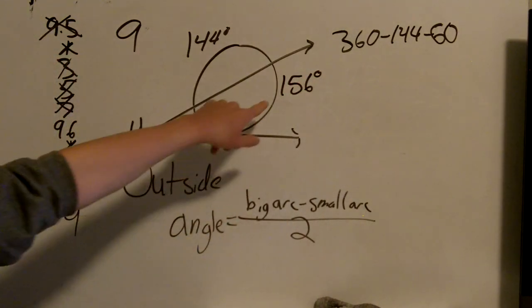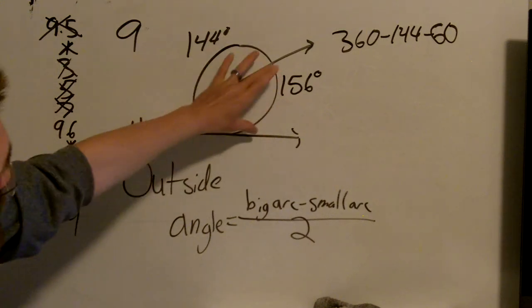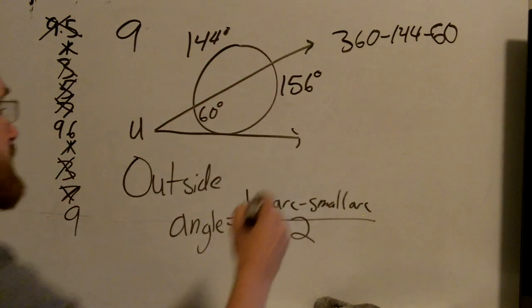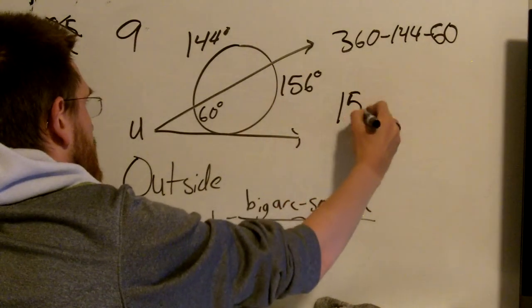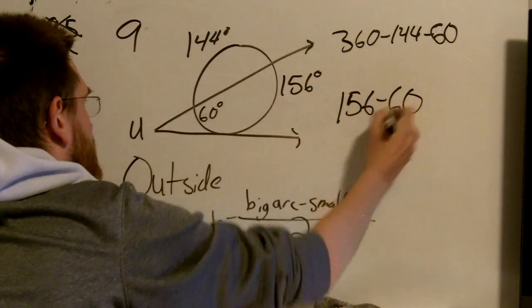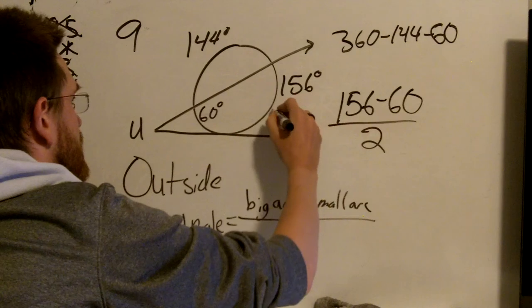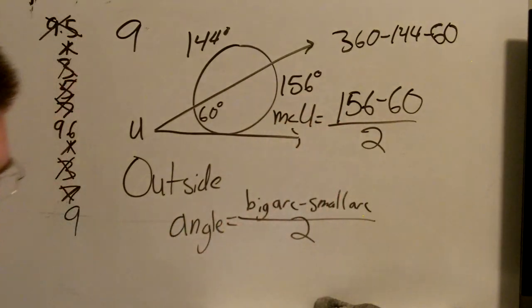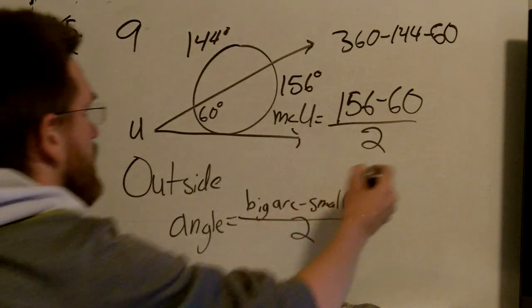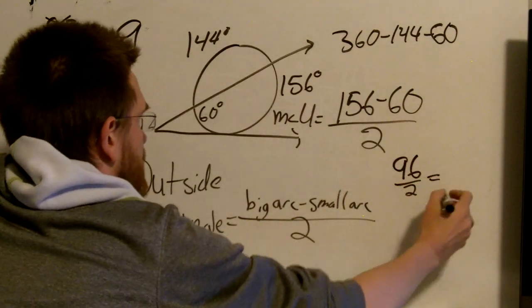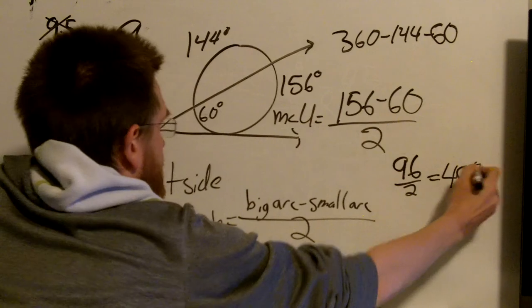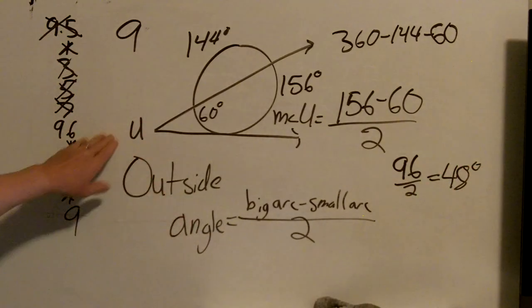And now, these two arcs are in between. So I take 156, big arc minus small arc, divided by 2. The measure of angle U equals 156 minus 60, divided by 2, which would be 96 divided by 2, equals 48 degrees. So the measure of angle U is 48 degrees.